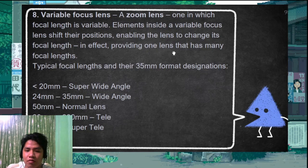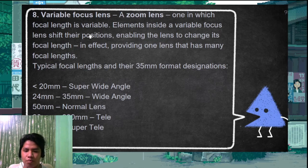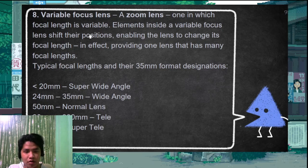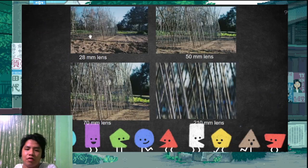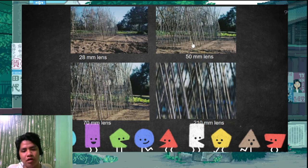The variable focus lens or zoom lens has a variable focal length — you can change the setting. If you want wide angle, you adjust to that; if you want telephoto, you adjust to that; if you want normal, you bring it back. The zoom lens has a mechanism to change the focal length, such as from 29mm to another setting.